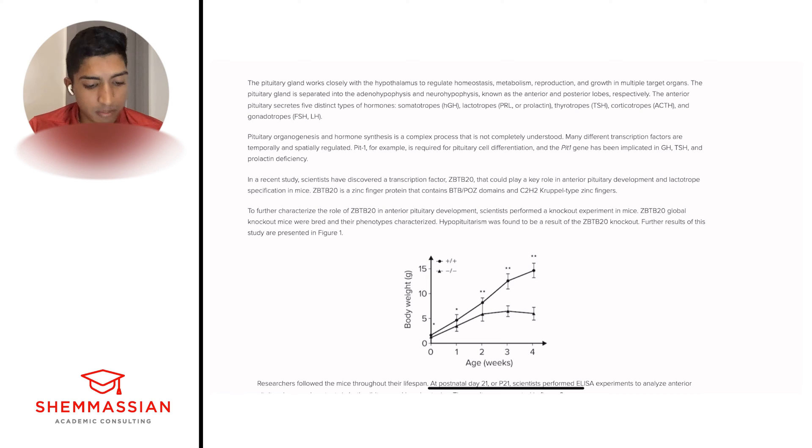The first thing is the pituitary gland works closely with the hypothalamus to regulate homeostasis, metabolism, reproduction, and growth. The pituitary gland is separated into the adenohypophysis and neurohypophysis, known as the anterior and posterior lobes respectively. The anterior pituitary secretes five distinct types of hormones: somatotropes HGH, lactotropes PRL or prolactin, thyrotropes TSH, corticotropes ACTH, and gonadotropes FSH and LH. So I continuously ask myself what's happening? And for me, that's just anterior pituitary releases five hormones. Quick three to five word summary, nothing too in-depth. We just want this as a roadmap.